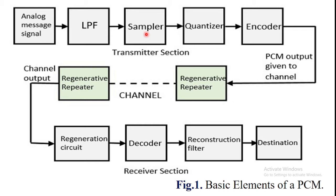The sampler is a technique that helps to collect sample data at instantaneous values of the message signal so as to reconstruct the original signal. The sampling rate f_s must be greater than twice the highest frequency component f_m of the message signal, in accordance with the sampling theorem.